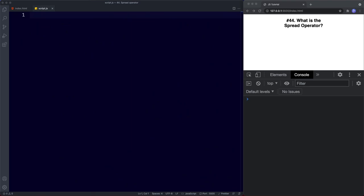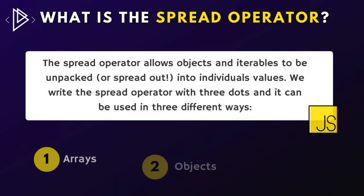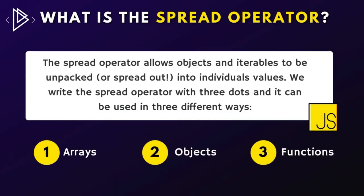Welcome back to lesson 44. In this lesson we're going to learn all about the spread operator. First of all, what exactly is it? The spread operator allows objects and iterables such as arrays to be unpacked or spread — hence the name — into individual values. We write the spread operator with three dots, and it can be used in three different ways: with arrays, with objects, and with function calls.